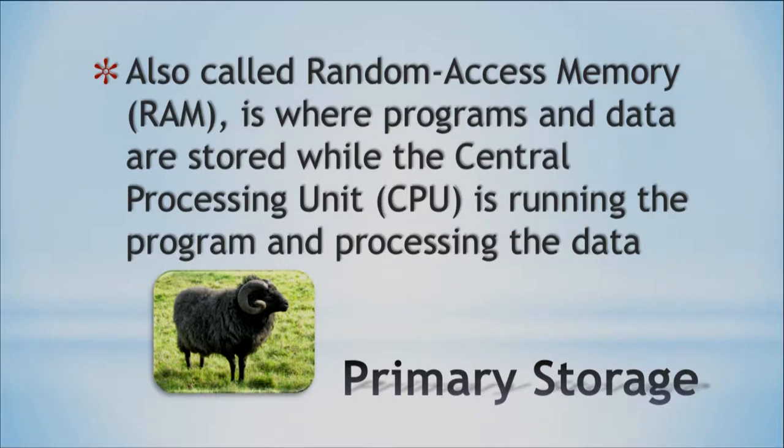We store our programs and our data in RAM while the CPU — the central processing unit, the main part of the computer that's running instructions — needs a place to store the data it's working on. So it goes to this random access memory. The 'random' means it can access any part of the memory — it can jump around to different parts. It's not random events going on in the computer.